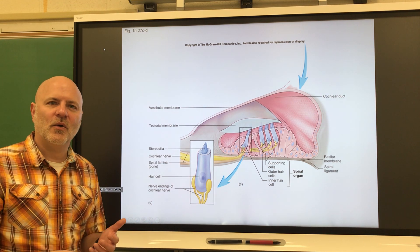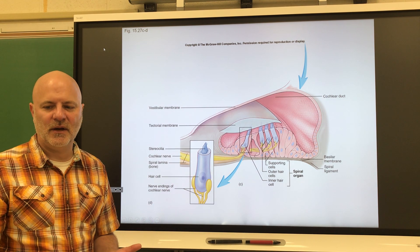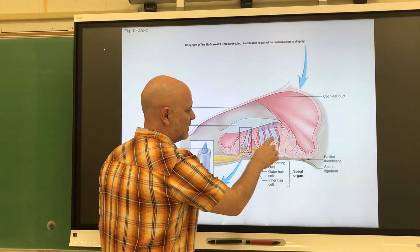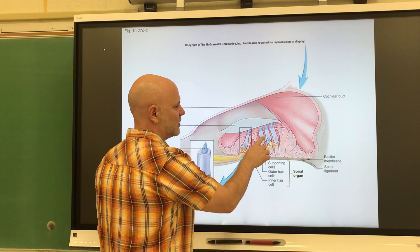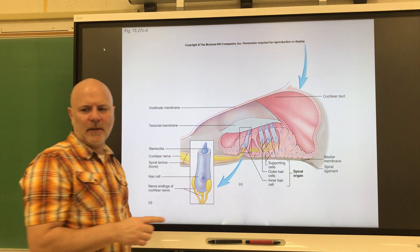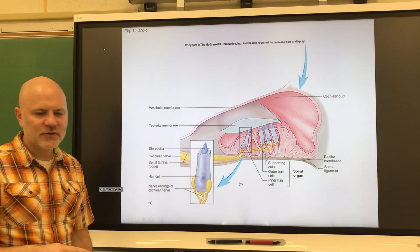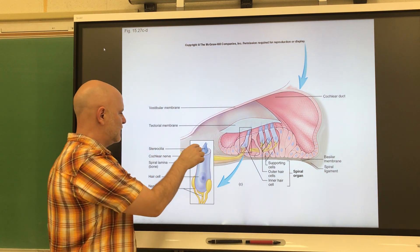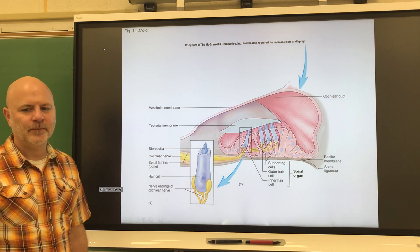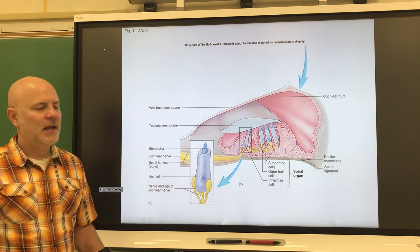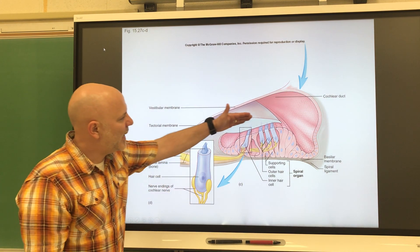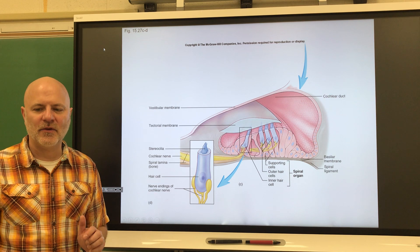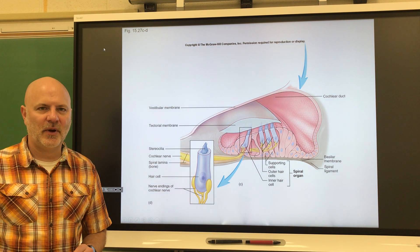The organ of Corti contains hair cells — the receptor cells for hearing. They have little hairs called stereocilia that stick above them. Above those hair cells is another membrane called the tectorial membrane.